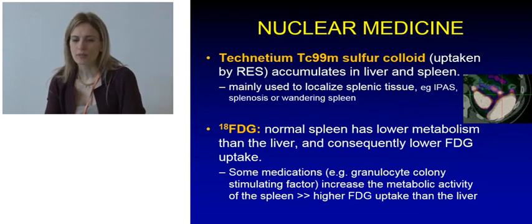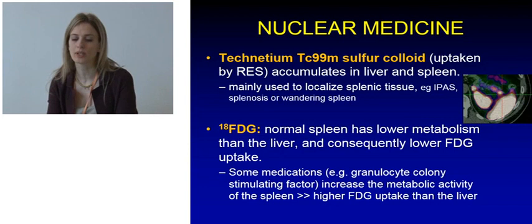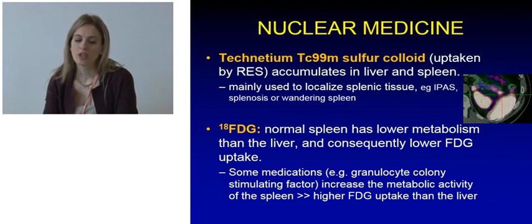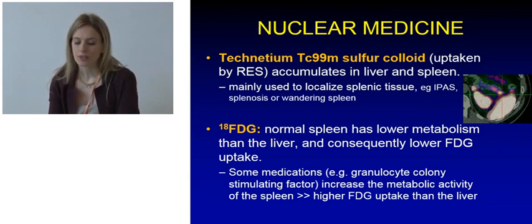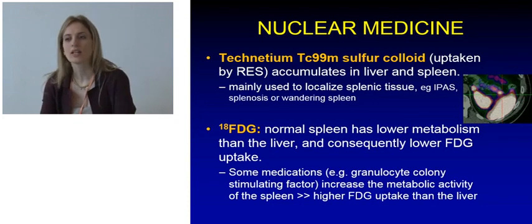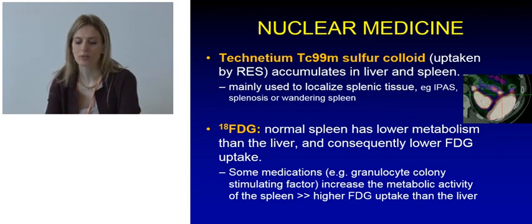Nuclear medicine uses different tracers. We can use Technetium T99 which accumulates in the liver and in the spleen and is used commonly to localize splenic tissues, typically intrapancreatic accessory spleens. FDG is normally taken up only a little by the normal spleen, with lower FDG uptake than the liver. But this uptake can increase after the patient takes some medications, for example G-CSF.